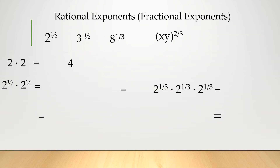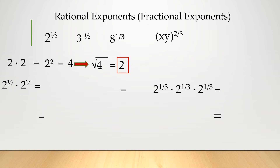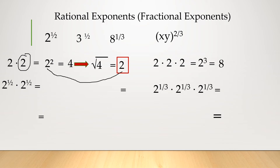Now, let's look at examples of rational exponents: 2 raised to 1 half, 3 raised to 1 half, 8 raised to 1 third. Applying the law of exponents — 2 times 2 means 2 raised to 2, equal to 4. The square root of 4 is 2, which is the original base. If I multiply 2 raised to 1/2 times 2 raised to 1/2, we add the exponents: 1/2 plus 1/2 equals 1, so 2 raised to 1. The square root of 2 equals 2 raised to 1/2. Similarly, 2 times 2 times 2 — three times — gives 2 raised to 3, equal to 8. The cube root of 8 is 2, which is again the base.